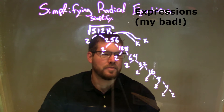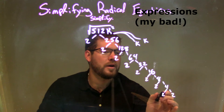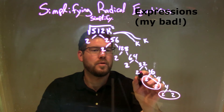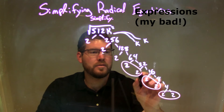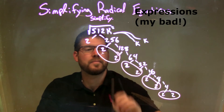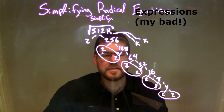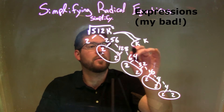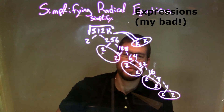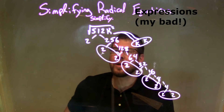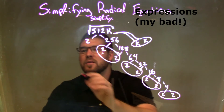Let's circle our pairs. A pair of twos right here — one pair of twos, two pairs of twos, three pairs of twos, and four pairs of twos. And a pair of k's too, don't forget that pair of k's. So every single pair we have, we're going to put outside of our square root.